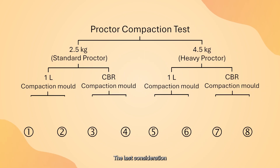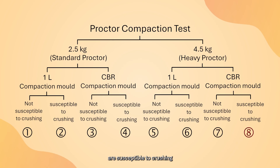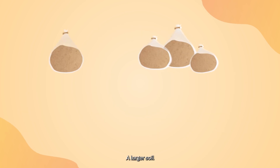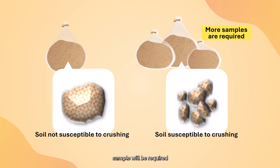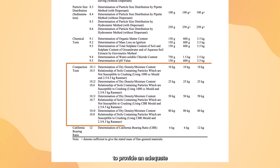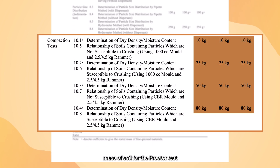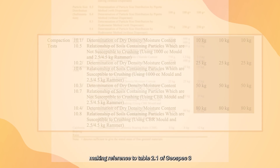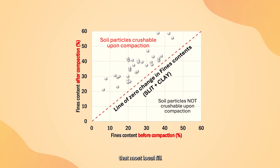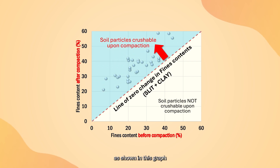The last consideration is whether the soil particles are susceptible to crushing under compaction. A larger soil sample will be required if the soil is susceptible to crushing. The designer is reminded to provide an adequate mass of soil for the proctor test, making reference to table 2.1 of GeoSpec 3. Previous studies have shown that most local fill materials are susceptible to crushing under compaction, as shown in this graph.